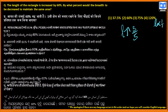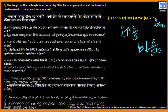Since length is inversely proportional to breadth (to keep the same area), when length increases, breadth must decrease. The initial length is 5, increased by 3, making the new length 8. So the breadth must decrease by 3 out of 8.